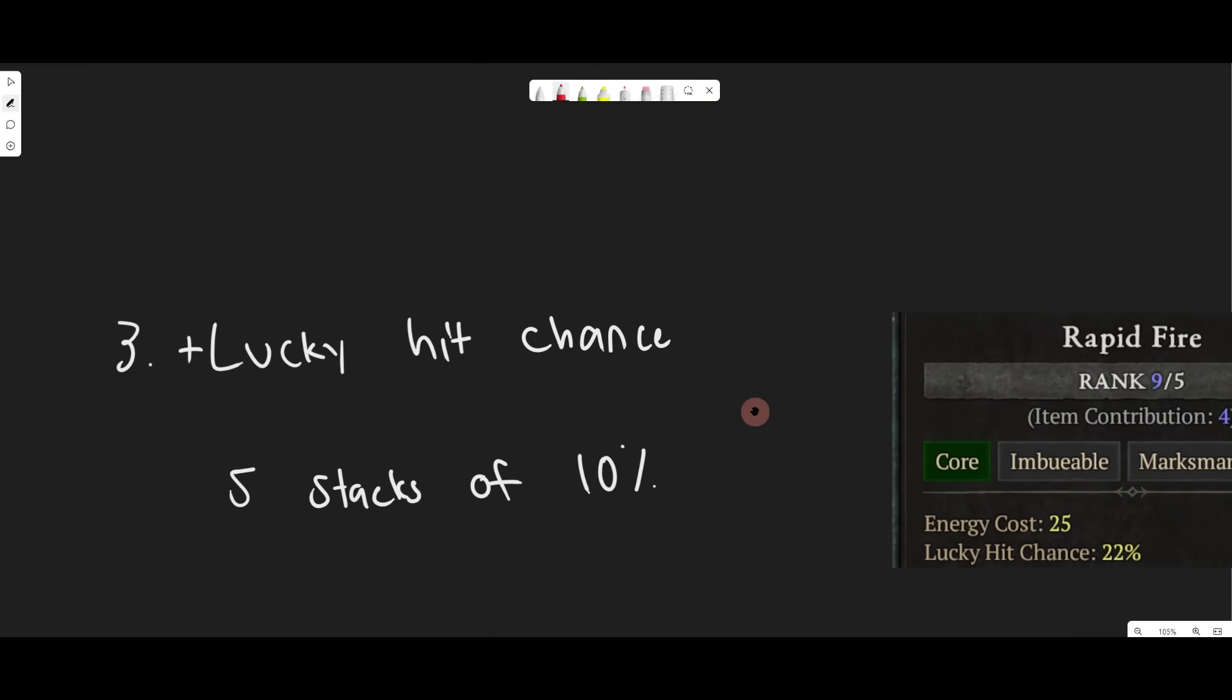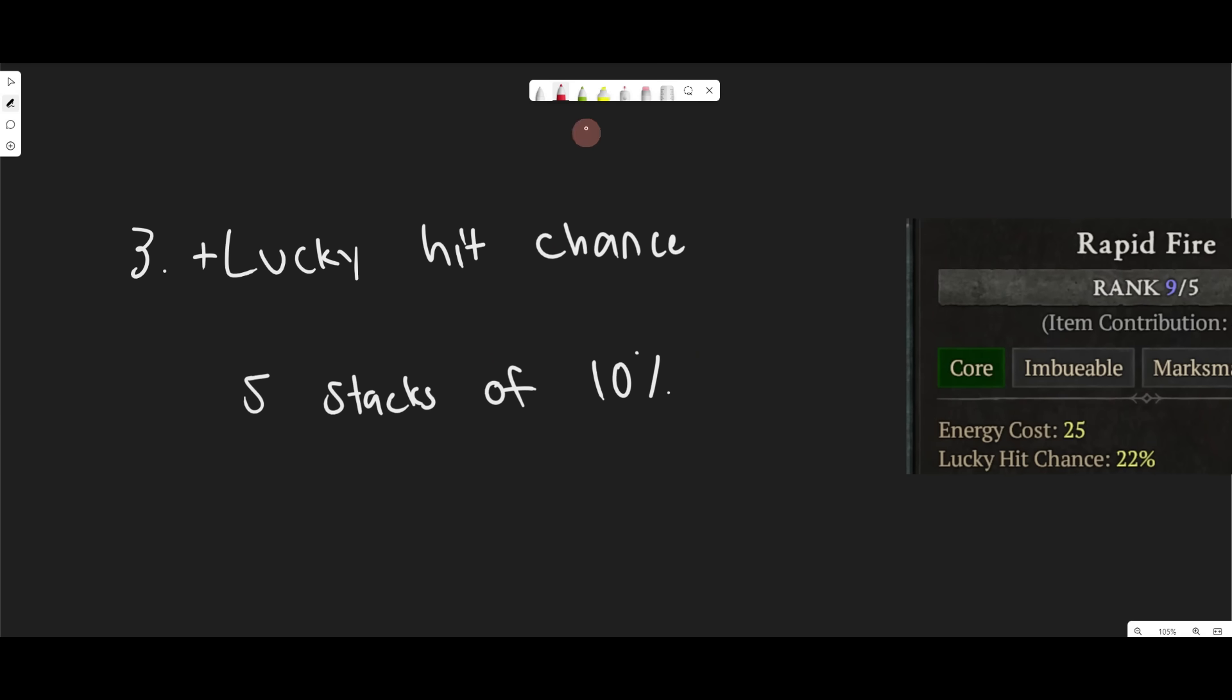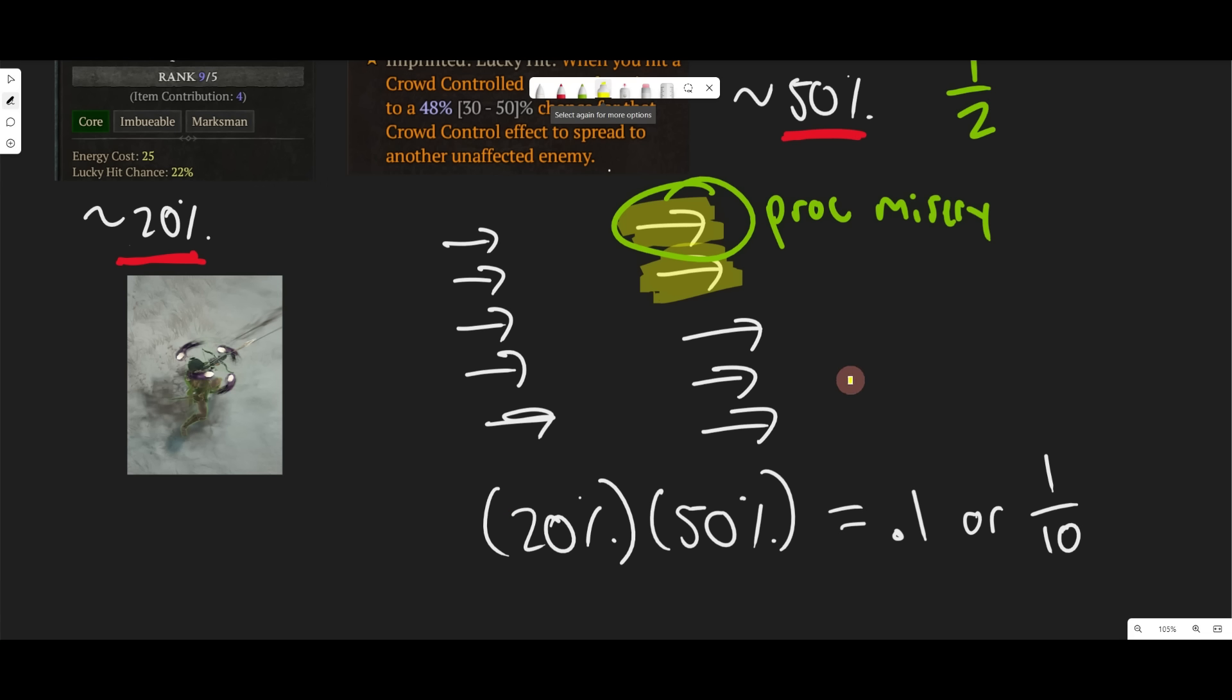And then the third thing that we can do to increase how many Lucky Hits we get is plus Lucky Hit Chance. So for example, let's see, you have five stacks of 10%. Well, then you would have a plus 50% Lucky Hit Chance. And what this does is it actually does exactly what it says it does. It literally adds 50% Lucky Hits on average.